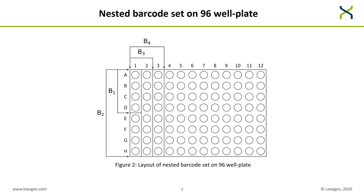Nested barcode sets can be arranged on well plates so that it's easy for a user to always select the barcodes optimal for the number of samples they want to multiplex. In this example we have four barcode sets B1, B2, B3, and B4, which are contained in each other. B1 has four barcodes, B2 has eight, B3 has 16, and B4 has 24 barcodes. By going top to bottom and left to right, the user always selects the barcodes with the largest inter-barcode distance — optimal for their sample number.